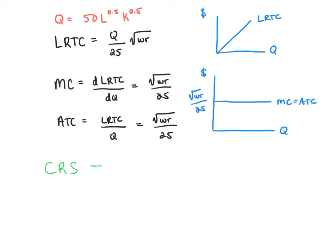Constant returns to scale means that when the firm doubles its inputs, output exactly doubles. So to double output, the firm will double the inputs. Doubling the inputs will also cause the cost to double. So to double the output, the firm will double the cost.